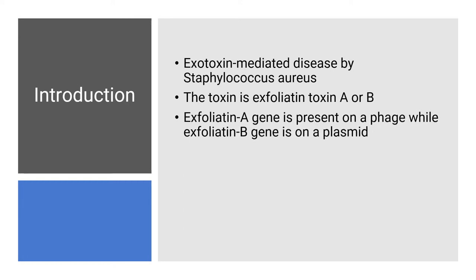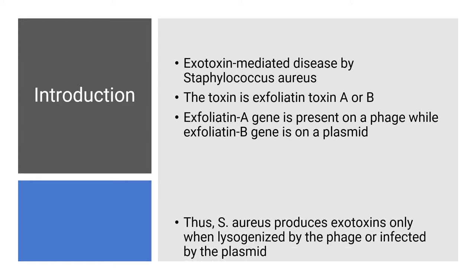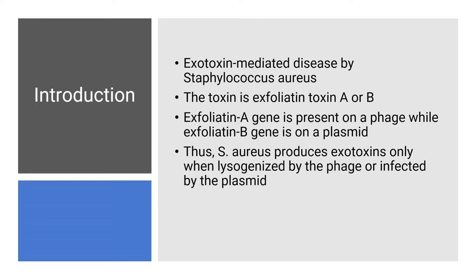The toxin-producing genes for both exfoliating toxin A and exfoliating toxin B are not present on the bacteria — they come from outside. The gene for exfoliating toxin A is present on the bacteriophage, and exfoliating toxin B is present on the plasmid. Staphylococcus aureus produces exfoliating toxin A only when lysogenized by the bacteriophage, and exfoliating toxin B is produced only when infected by the plasmid.